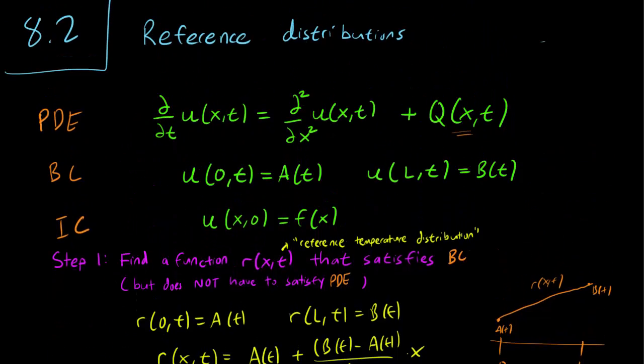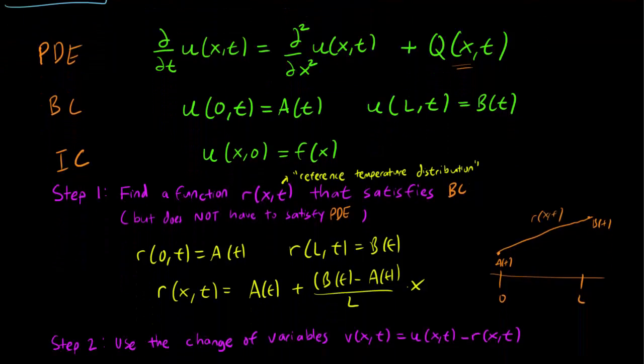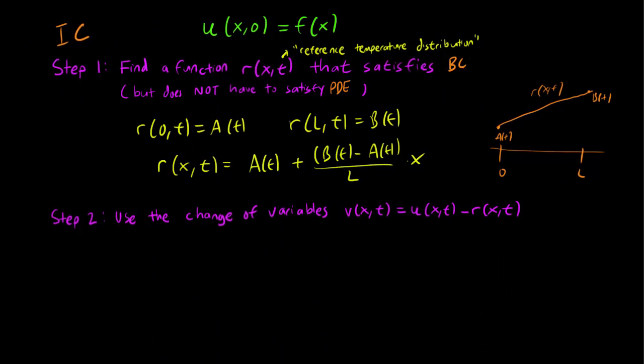By the way, I should mention that the reason that we don't have an equilibrium solution for this problem is that everything is changing with time. So the heat source is changing with time, the boundaries are changing with time. So it makes sense that every solution of this equation is going to be changing with time, and there is no equilibrium solution. And that is why our r(x,t), our reference distribution, is a poor replacement for that equilibrium solution.